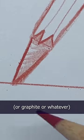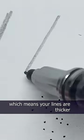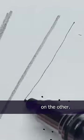See, when you draw the lead or graphite or whatever it wears down based on the angle of the pencil so you get a flat spot like this which means your lines are thicker on one side of the lead and thinner on the other.